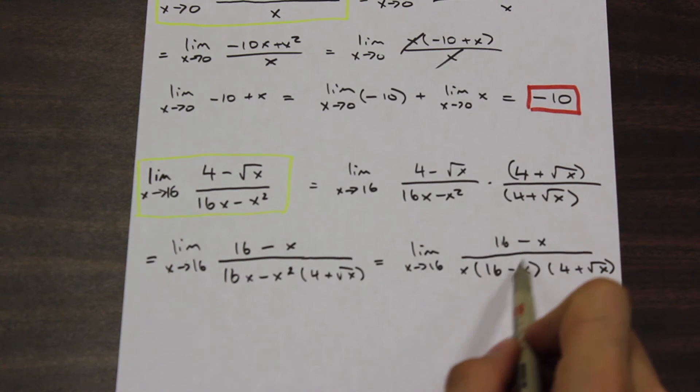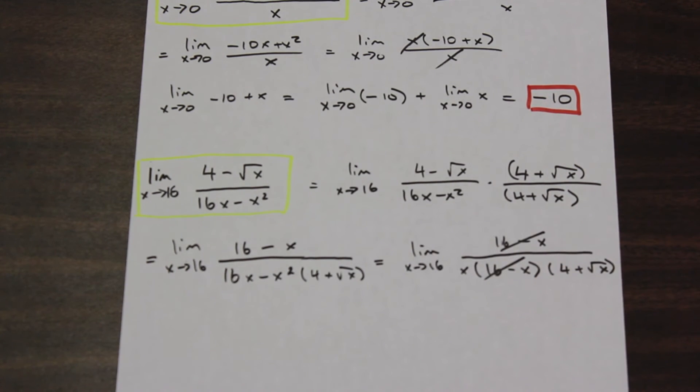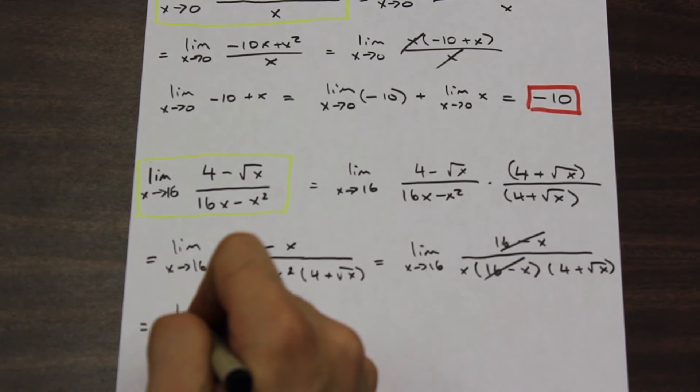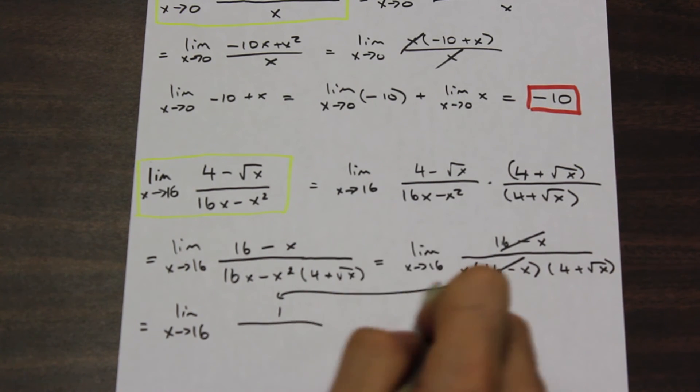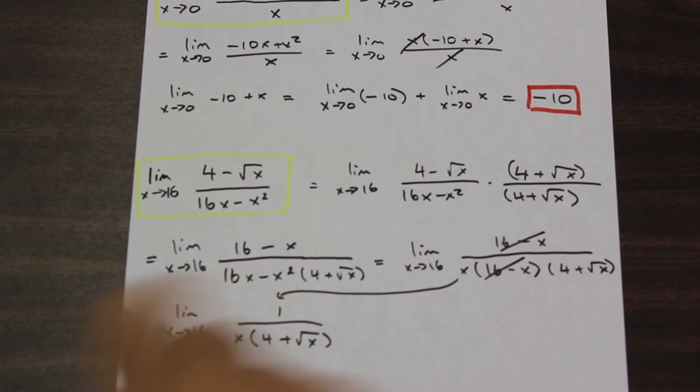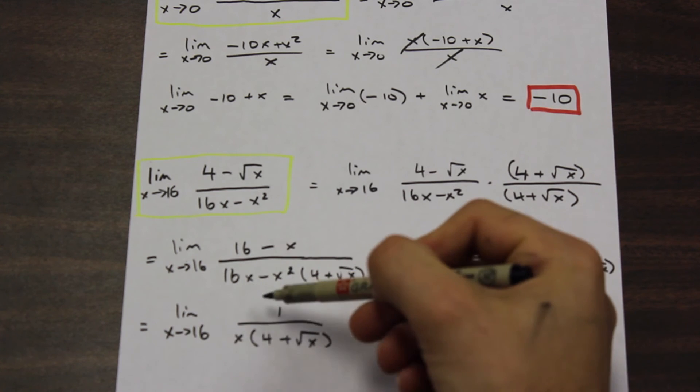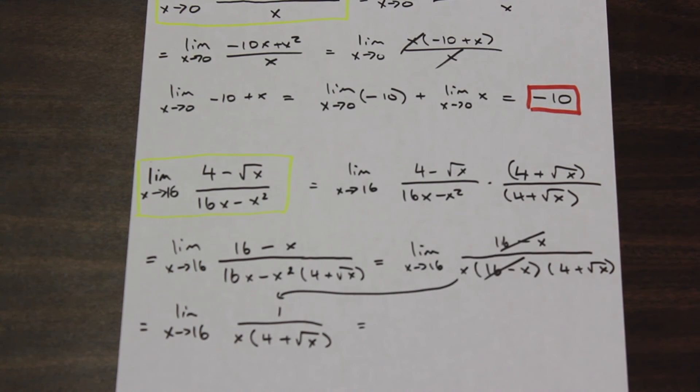So 16 - x, and that is still multiplied by 4 + √x. So as we can see, we've created a factor here that we can cancel with the numerator. So we're going to go ahead and cancel that. And we are left with a further simplified function of, let's just draw an arrow here so we know where we're going. So we're left with 1/(x(4 + √x)). So that's looking much better, and it's looking like it's beginning to become defined in a way.